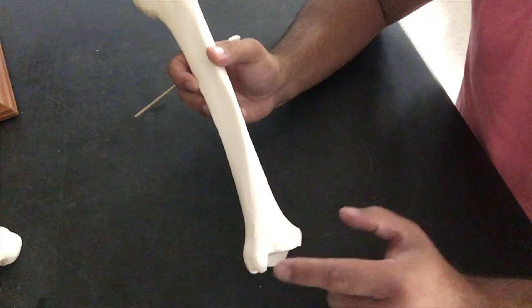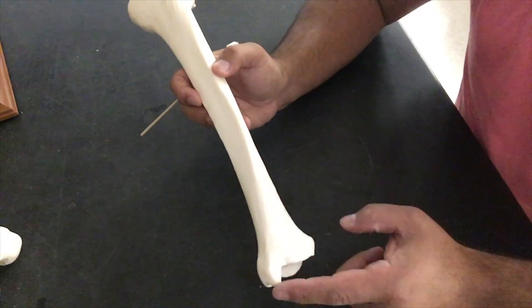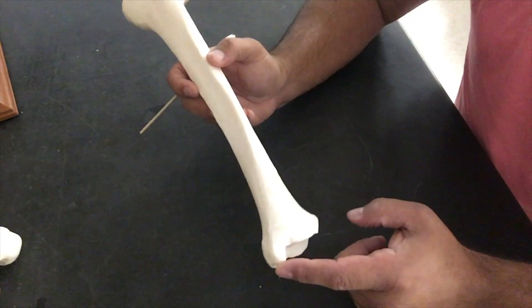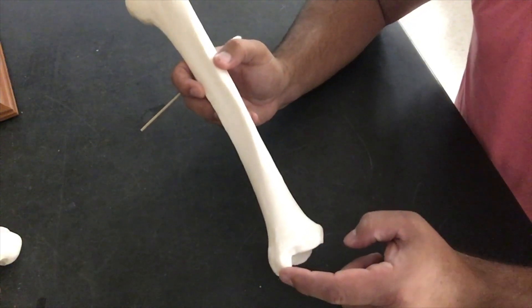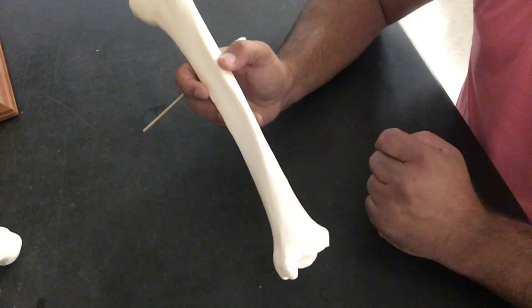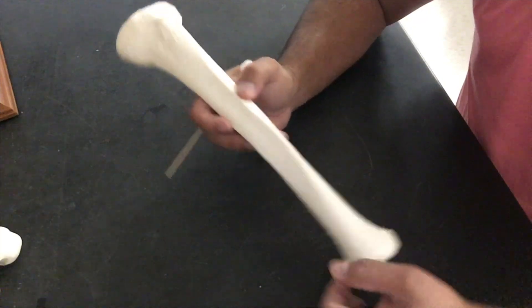Now, with that being said, if this is the medial malleolus, that means that the tibia has to be the medial most bone in your lower limb. So that means that if this is facing medial, this must be a left tibia. If it was on the other side, it would be a right tibia, so this is a left tibia.